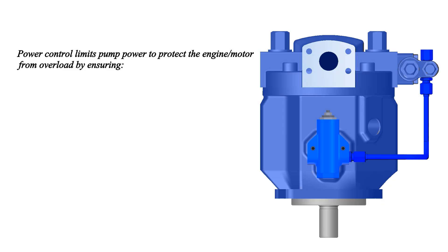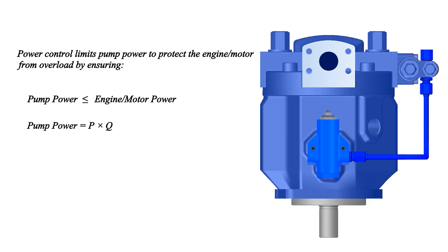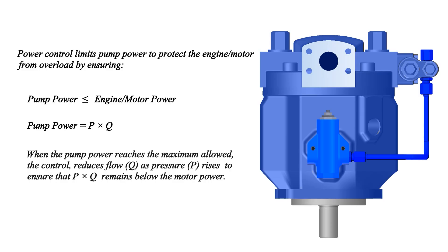Power control limits pump power to protect the engine motor from overload by ensuring pump power is less than or equal to engine motor power. Pump power equals pressure multiplied by volumetric flow rate. When the pump power reaches the maximum allowed, the control reduces flow as pressure rises to ensure that pressure multiplied by flow rate remains below the motor power.